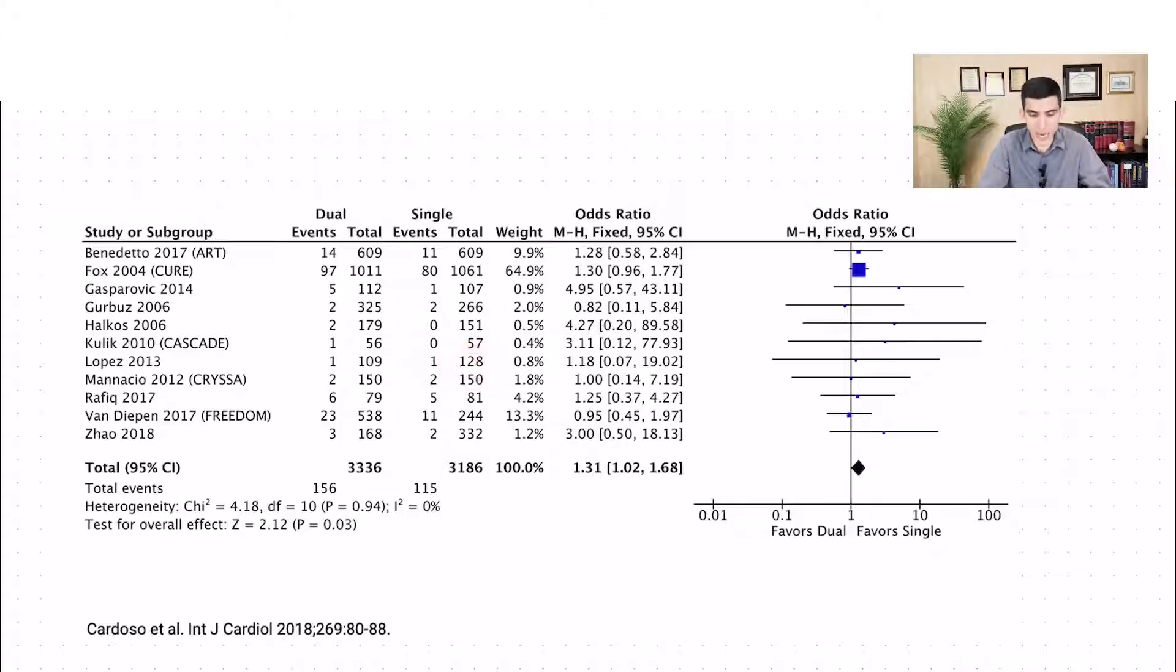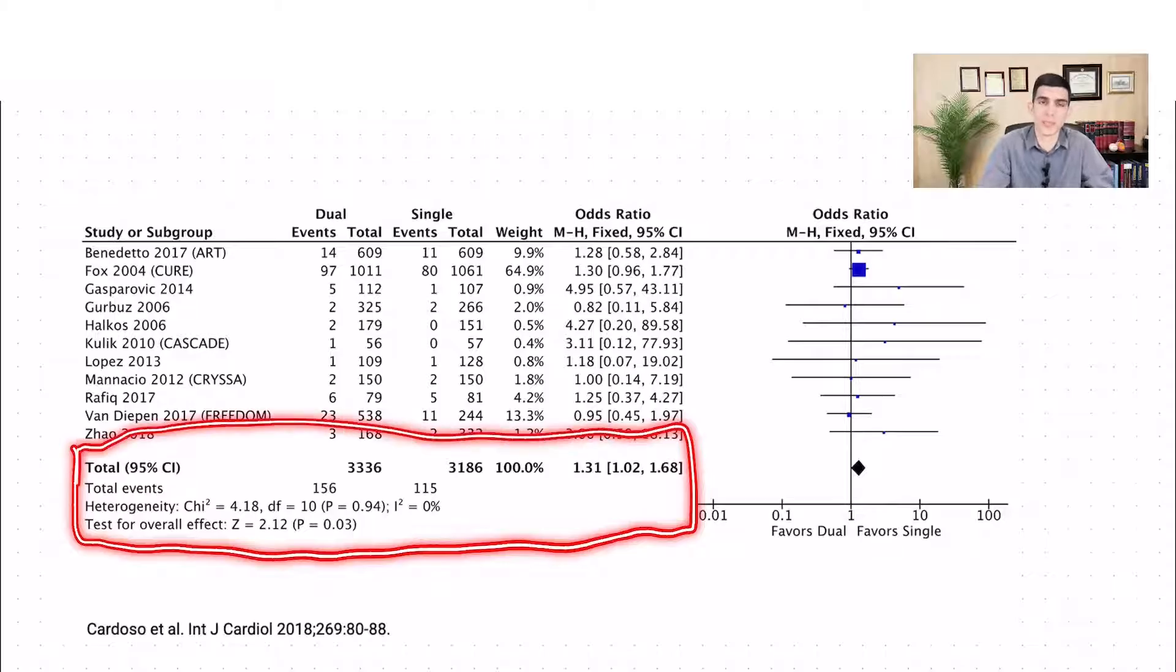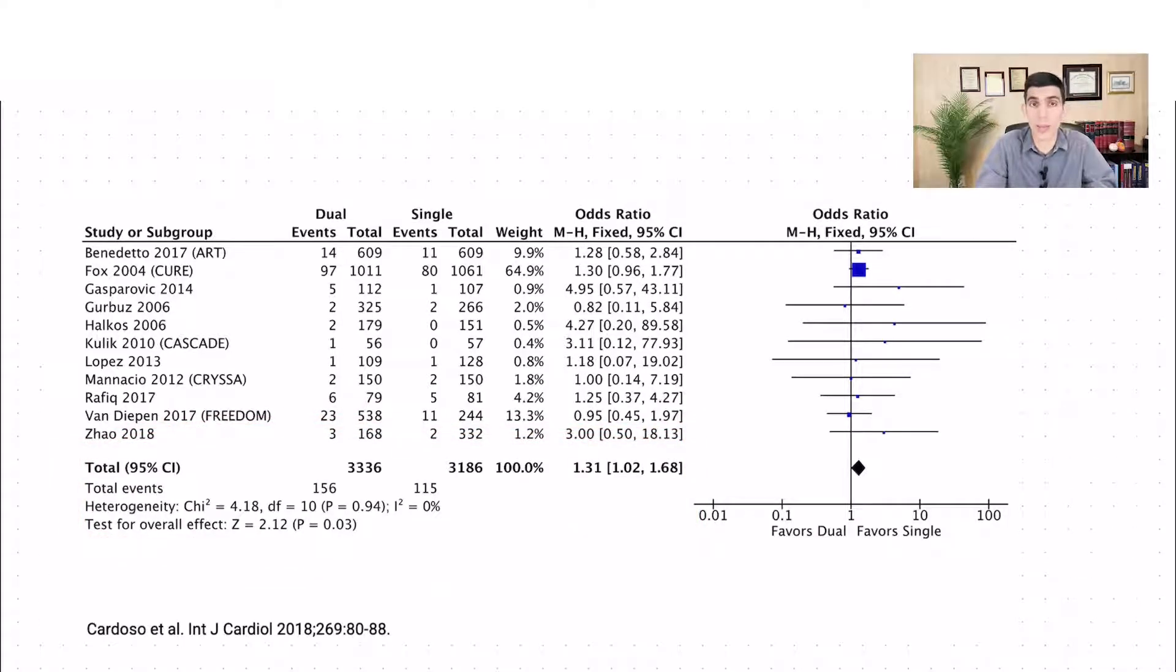So each line represents the results of one individual study. But over here at the bottom, we have the pooled outcomes of all the different studies. And this is exactly what a meta-analysis is. A meta-analysis is the quantitative synthesis of the results of different studies, as long as they are similar to each other. That's exactly what we have.